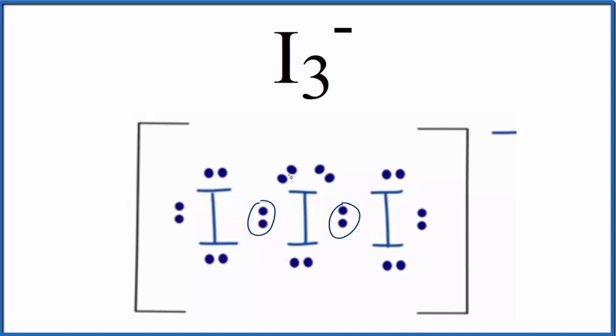Lone pairs, these are the ones that aren't involved in chemical bonds. So for this iodine right here, we have one, two, three. So we have three lone pairs around this central iodine atom in I3-.